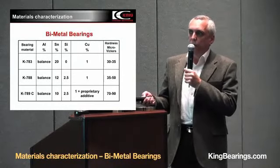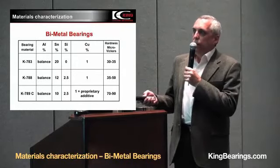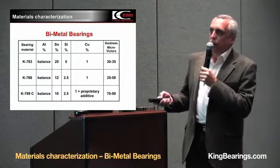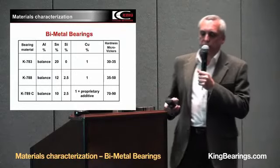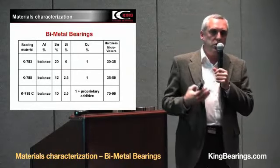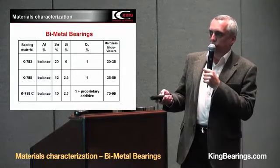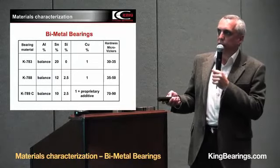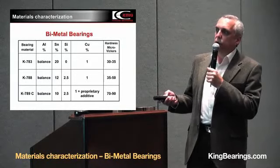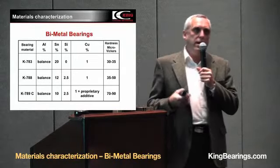The third material is a new development. It is very similar to the second, but its hardness is twice as high as that of K788. This is because of a proprietary additive which allows heat treatment to be performed, resulting in increased hardness. So this material is not only anti-frictional because it contains tin, and it also contains silicon for abrasive action with shafts, but it also contains a proprietary additive which allows increased hardness — enabling it to work in engines with high loads.